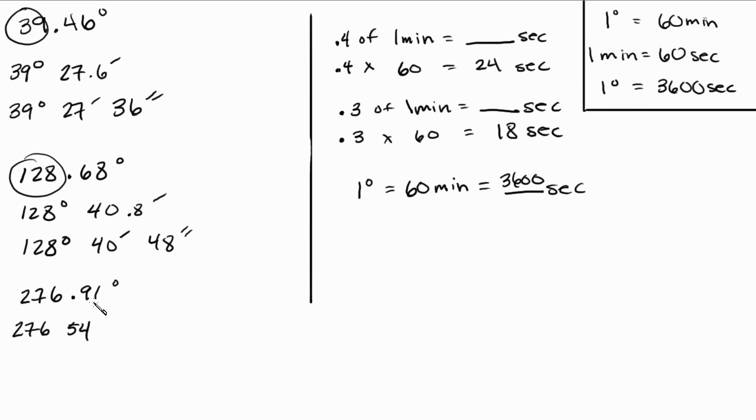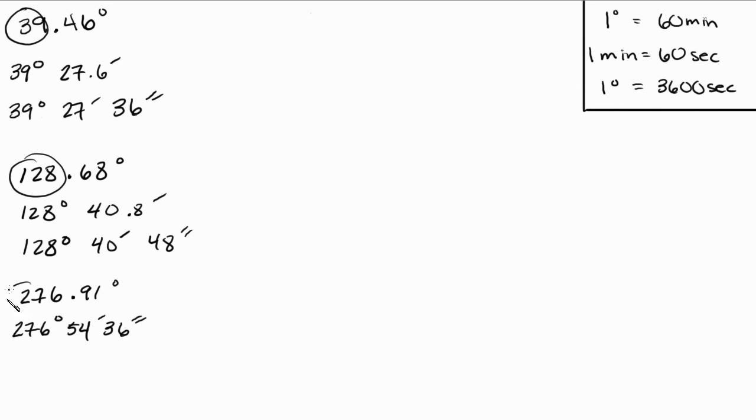Now multiply that times 60 and that gives you 36 seconds and you just mark everything off, right? See how much faster it's getting? Okay, let's do another one. Let me get rid of this line and everything else for that matter. See, these are getting a lot quicker now, right?